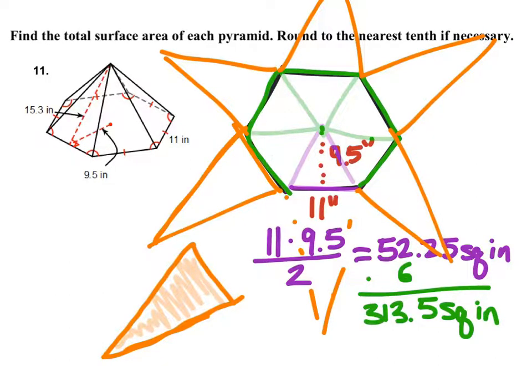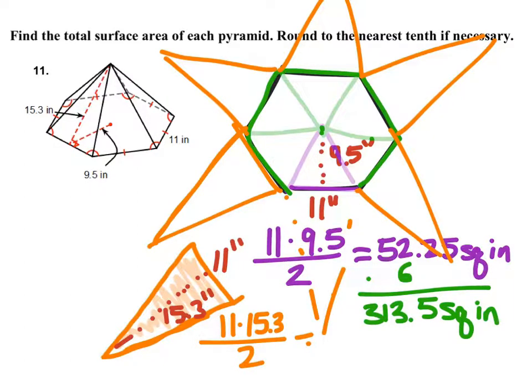So on this one, the base is still 11 inches right here, and then the height of this one, it shows right there, and that is telling us it is 15.3 inches. So the height of this one is 15.3 inches. Now I just want the area of one of those triangles, so I'm going to take that 11, multiply it by 15.3, and divide this by 2. When I put this into my calculator, this one gives me 84.15 square inches.